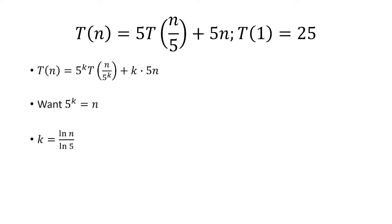So solving for k we have ln of n over ln of 5, and we plug that back in for k. Now 5 raised to the ln of n over ln of 5 is n because that's what we solve here for k.